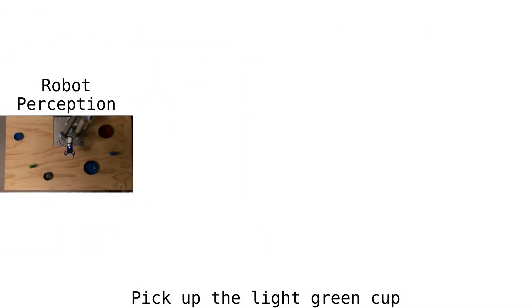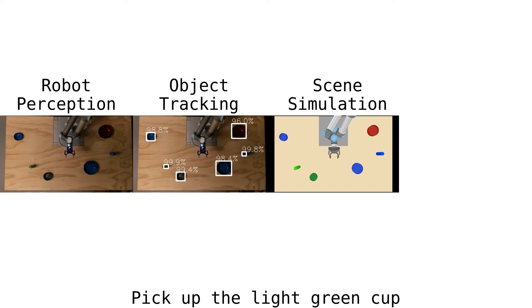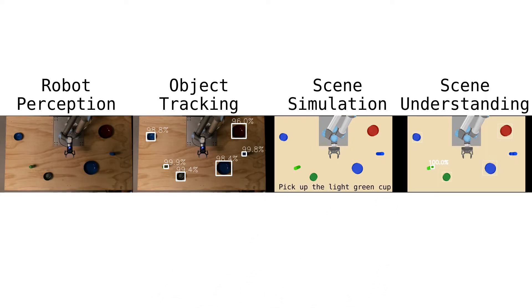Multimodal information from vision and language is used to generate robot control policies. In particular, perception is used to extract contextual information about the scene.